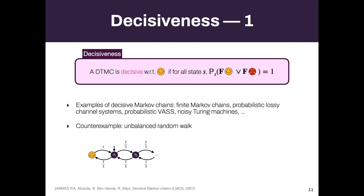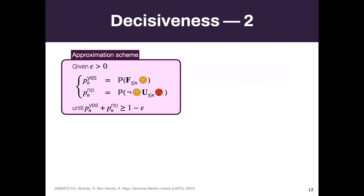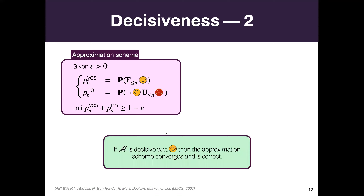When you have a decisive Markov chain, the natural approximation scheme — computing for every length the probability of reaching the good state in that many steps, or never being able to reach it again in n steps — converges and is correct. It gives an epsilon-approximation of the target probability. In fact, it converges if and only if the Markov chain is decisive.